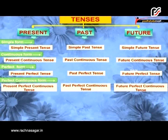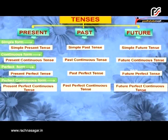The simple form of present tense is simple present. The continuous form is present continuous. The perfect form is present perfect tense. The perfect continuous form is present perfect continuous tense.